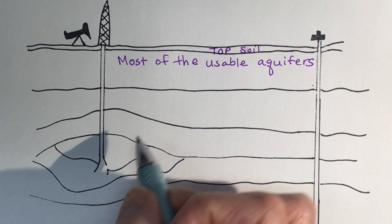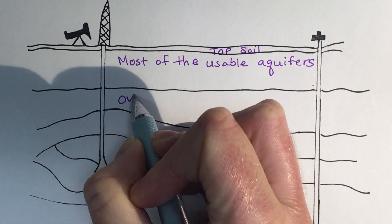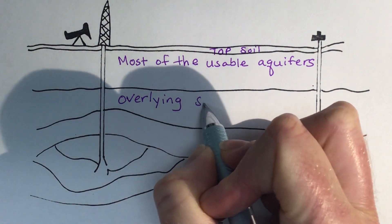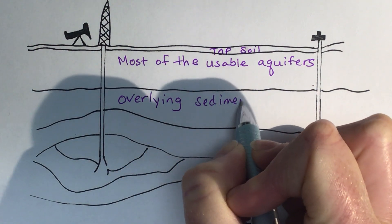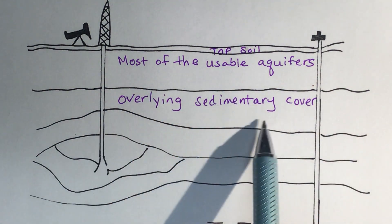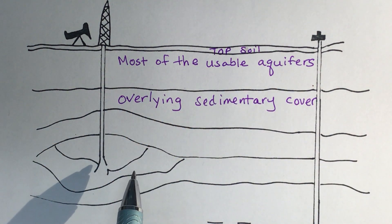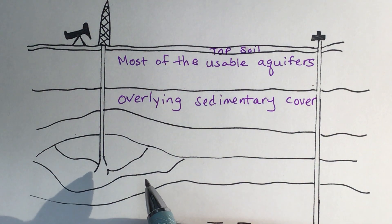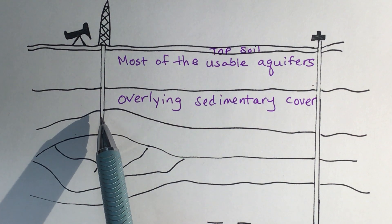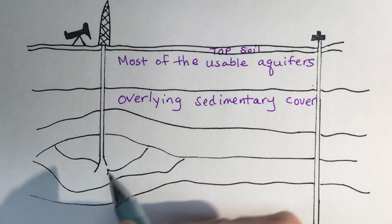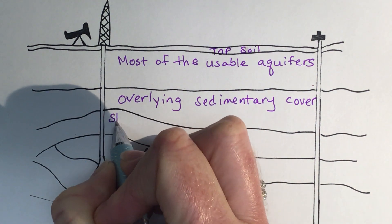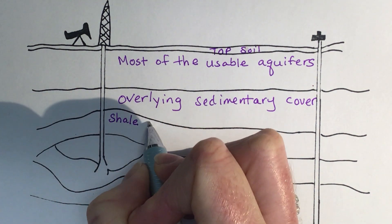Then we have what's called an overlying sedimentary covering — this is the cover over the next layer, a sedimentary rock cover. The next layer is a shale cap.